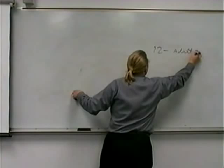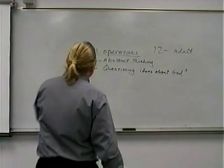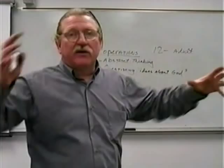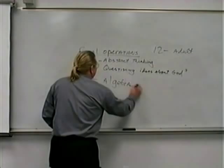Then somewhere around age 12 to adulthood, the stage of formal operations begins to appear. This is abstract thinking — much more abstract than they were able to do before. Kids often start questioning ideas about God, whether God exists, or whether God is like their parents raised them to believe, getting into some conflicts with parents. They spend hours daydreaming about infinity and the universe. This is when they can start doing things like algebra a lot easier — it starts to become easier to teach and learn at this stage.